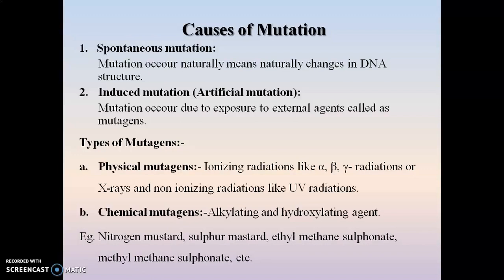The second type of mutagen is chemical mutagen, where alkylating or hydroxylating agents are known as chemical mutagens. Examples include nitrogen mustard, sulfur mustard, ethyl methane sulfonate, and methyl methane sulfonate. These chemical agents cause changes in the DNA structure and show alteration in the genetic material, thus causing mutation.